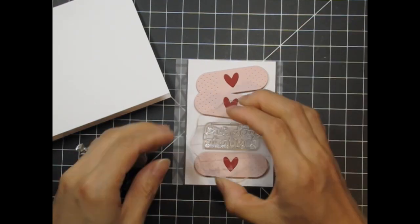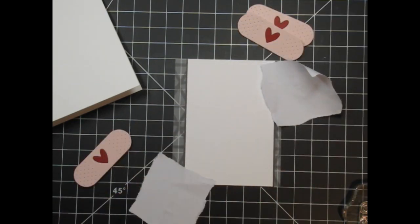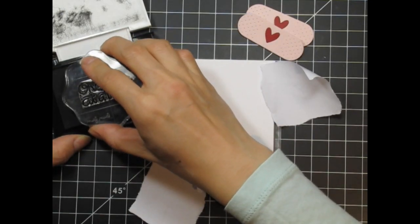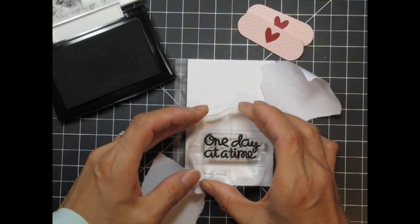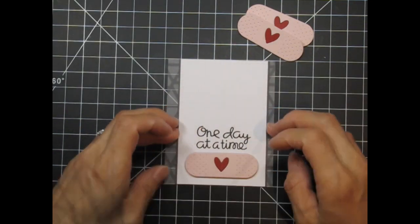After moving everything around I decided I liked the sentiment better amongst the band-aids rather than at the bottom. I tape down the panel with masking tape and stamp the sentiment with VersaFine Onyx black ink. Then I peel the backing off the foam tape and adhere the band-aids.